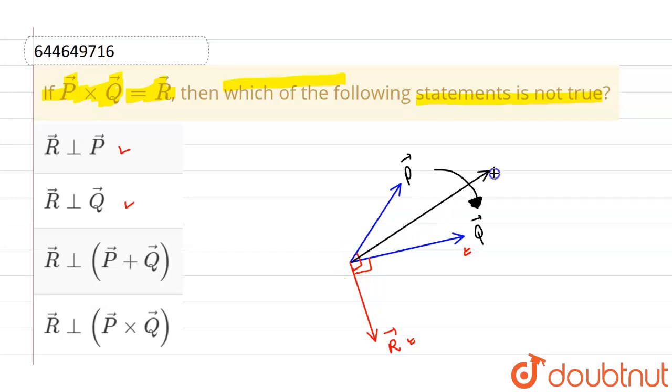P plus Q-vector will also lie in the plane of P-vector and Q-vector. So if P-vector is perpendicular to R-vector, Q-vector is perpendicular to R-vector, then obviously P plus Q-vector will also be perpendicular to R-vector. Since R-vector is perpendicular to the whole plane which is containing P-vector and Q-vector, this option is also correct.